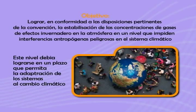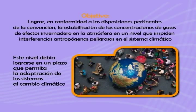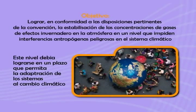Dentro de la Convención Marco de las Naciones Unidas sobre el Cambio Climático se define un objetivo: lograr, de conformidad a las disposiciones pertinentes de la Convención, la estabilización de las concentraciones de gases de efecto invernadero en la atmósfera en un nivel que impide interferencias antropógenas peligrosas en el sistema climático. Este nivel debería lograrse en un plazo suficiente para permitir que los ecosistemas se adapten naturalmente, asegurar que la producción de alimentos no sea amenazada y permitir un desarrollo económico sostenible.